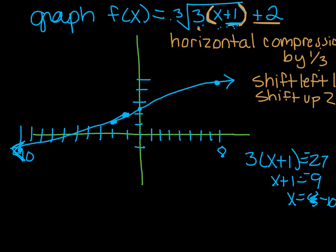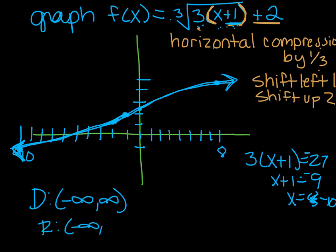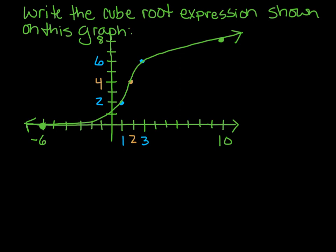There's my graph. It is compressed horizontally by a third, which means it's pretty stretched out there, and it's left 1 and up 2. Domain, all real numbers. Range, all real numbers. All right, one more problem.